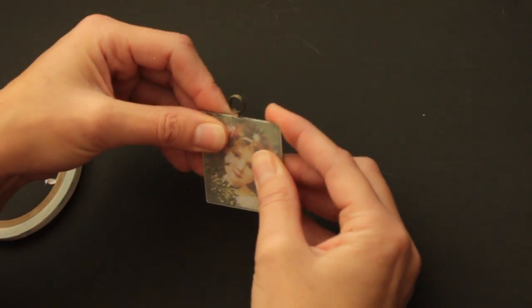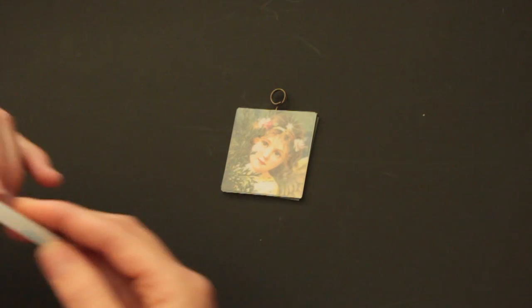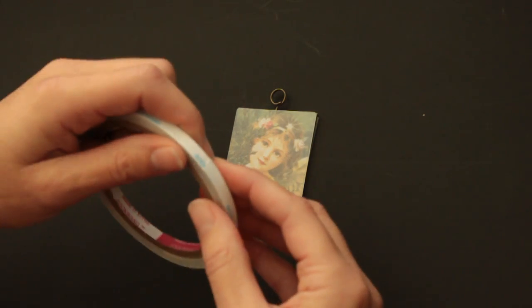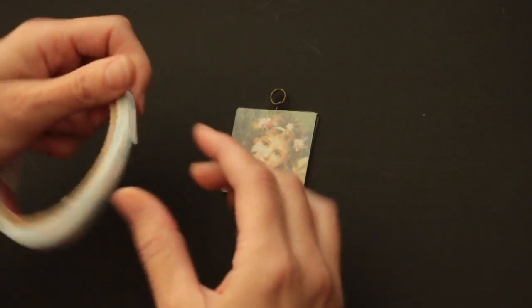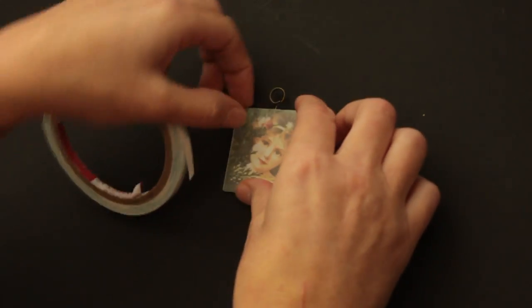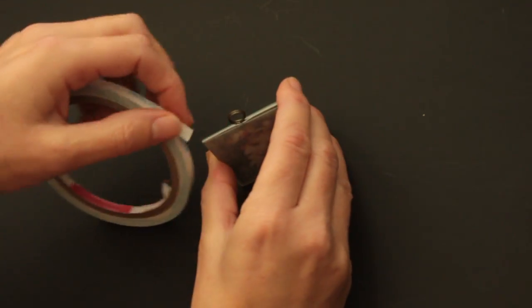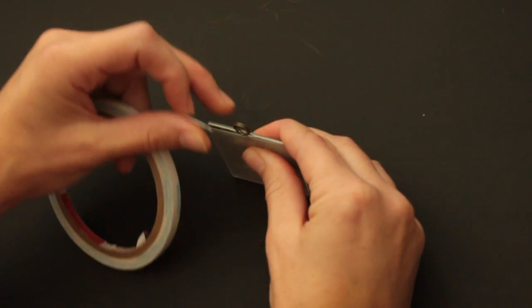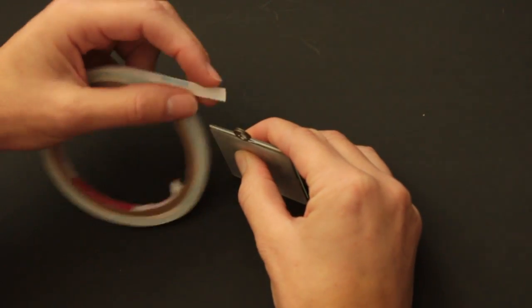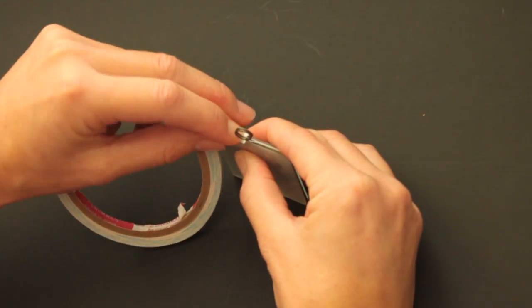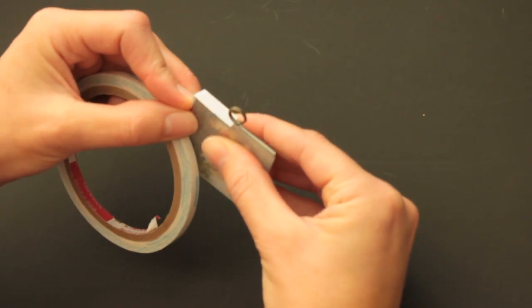Now instead of adding it into a frame, if you don't have a frame or if you want something different, you can use strong adhesive and add this all around your two pieces of glass.